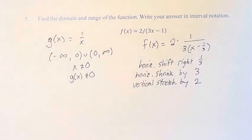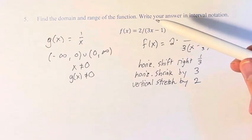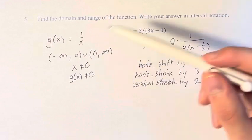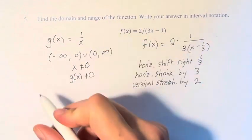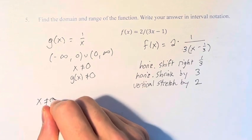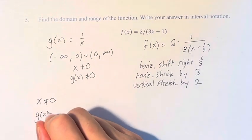So what we have to do is apply these shifts to the original function and see how that changes the domain. We start with x is not equal to 0 and g(x) is not equal to 0.